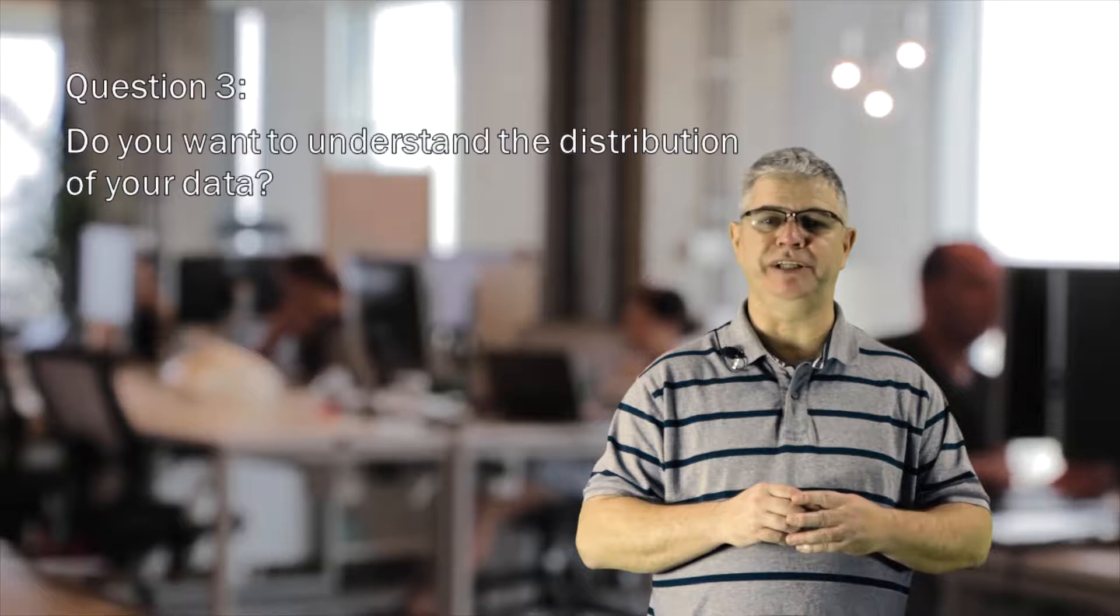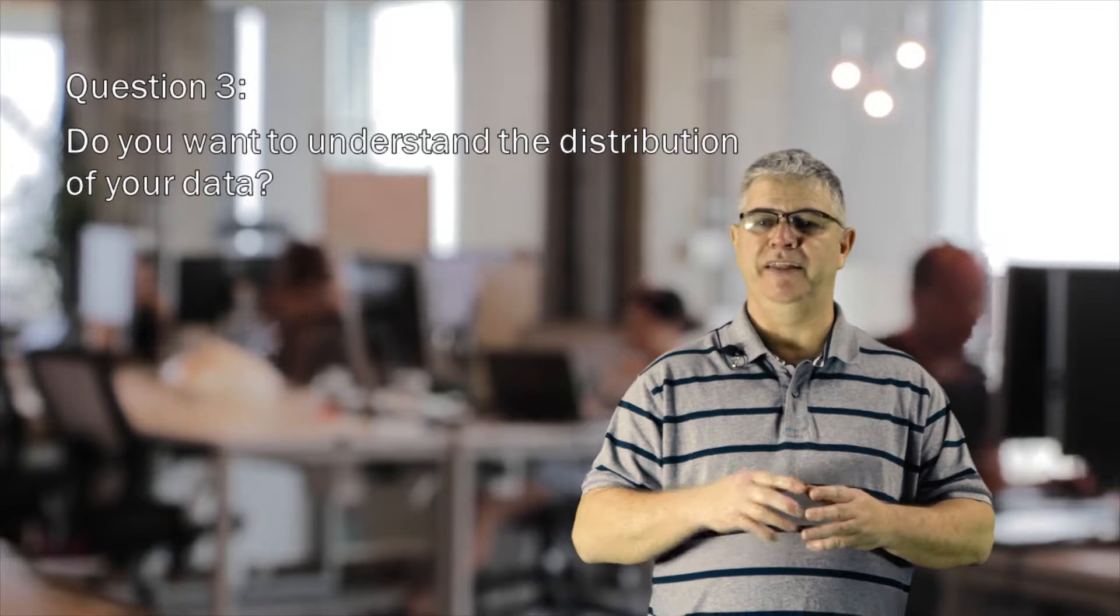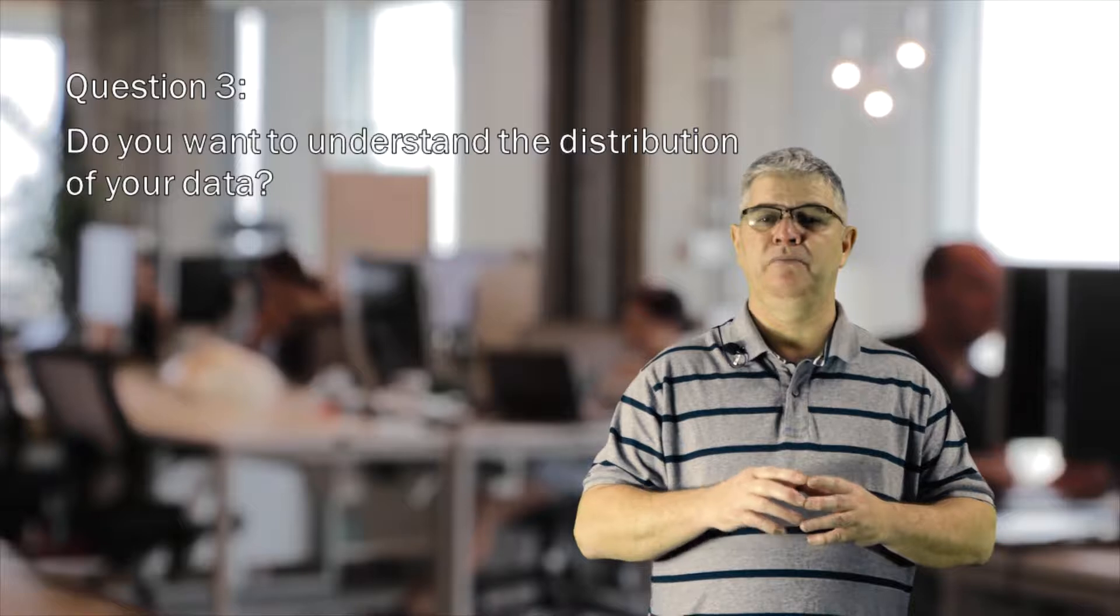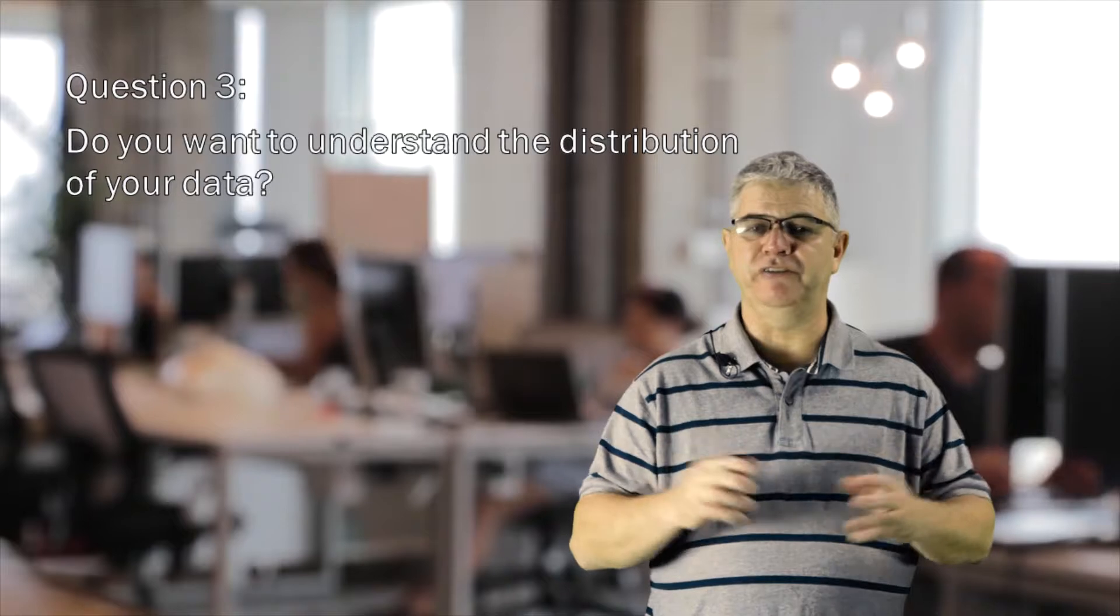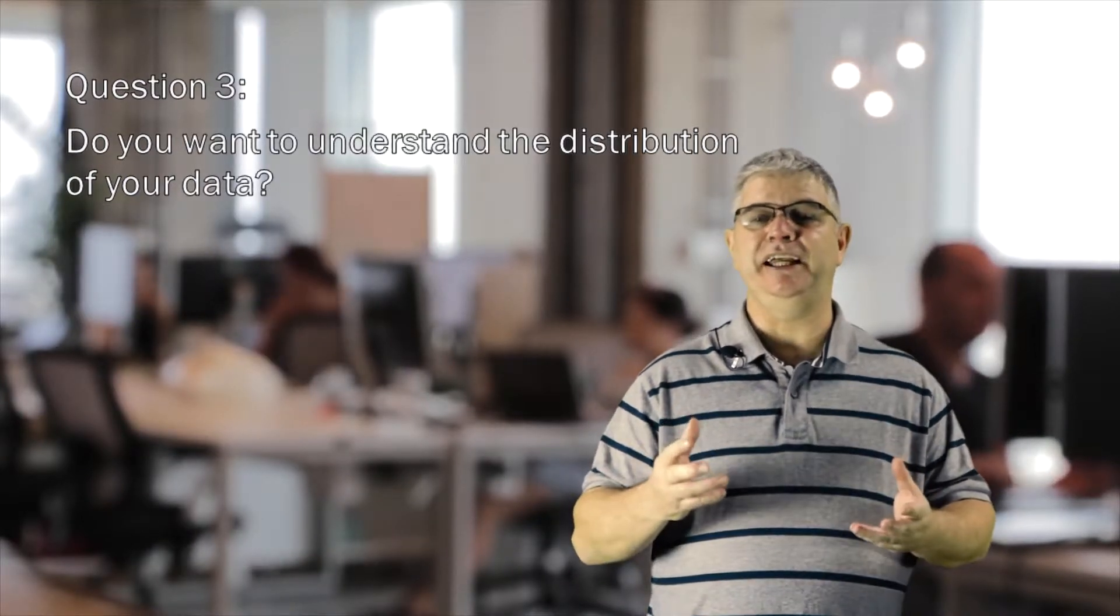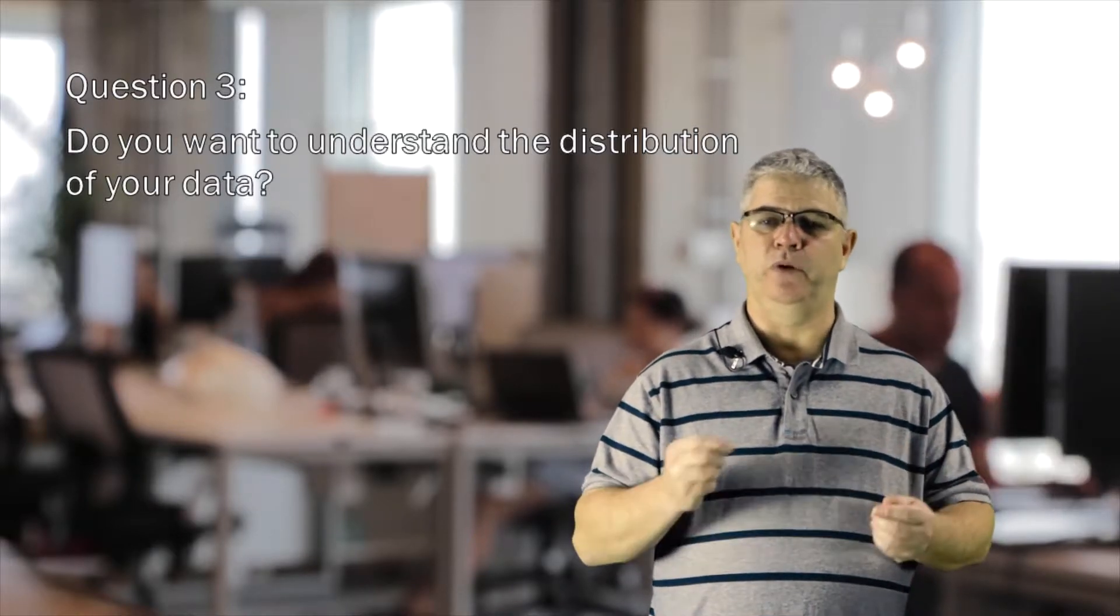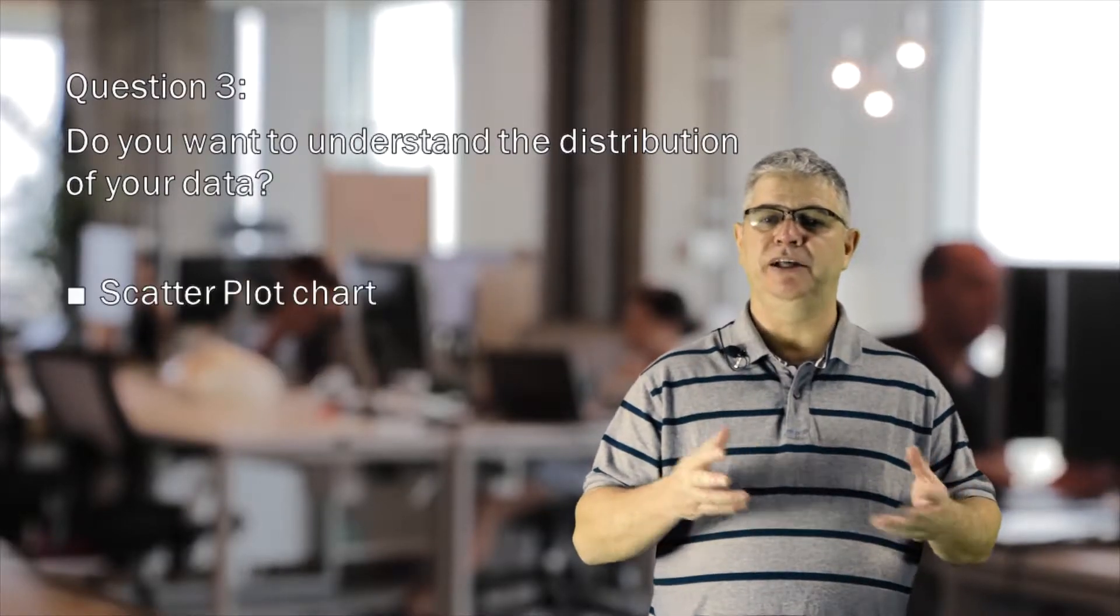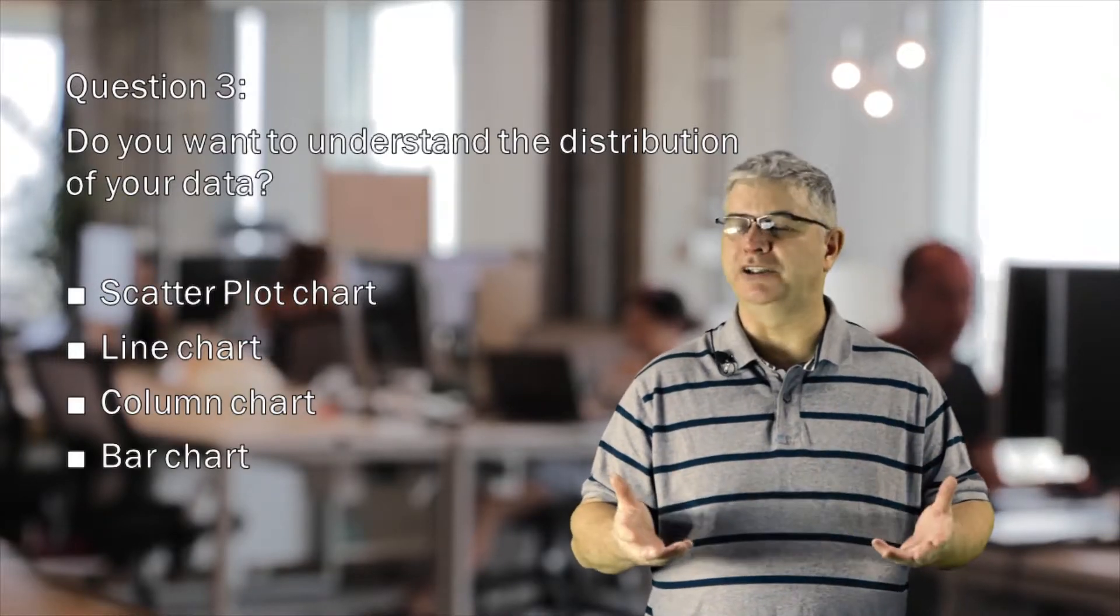Question three: Do you want to understand the distribution of your data? Distribution charts help us to understand outliers—that's the biggest and the smallest numbers in our set of data. Maybe the tallest and shortest heights if we're measuring how tall people are in Asia University. We can easily see the normal tendency and the range of information in the values. We might choose any one of the following charts to show distribution: a scatter plot chart, a line chart, a column chart, or a bar chart.